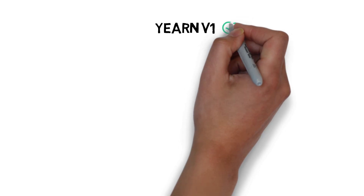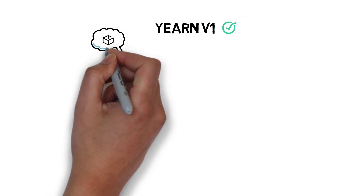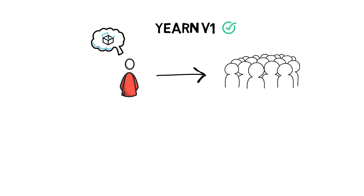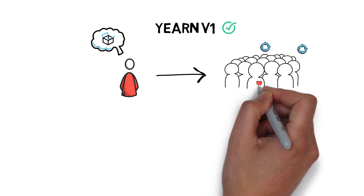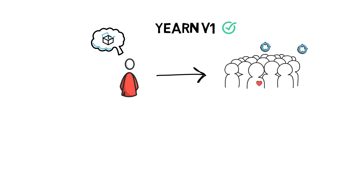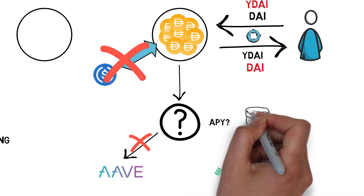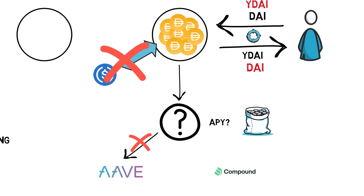After the initial version of the protocol was completed, Andre decided to open it up to more people who were also interested in automating their yield strategies. From the protocol's perspective, adding more funds to the pool was beneficial as there were more opportunities for triggering rebalances with more deposits and withdrawals. As the money in the pools started growing, some of the previously obvious strategies like moving coins into the highest paying lending protocol stopped working. Now the protocol had to anticipate what would happen to the APY if a large amount of funds are moved in, and optimize splitting funds between different protocols to choose the most optimal solution.